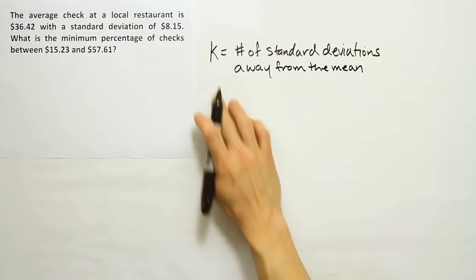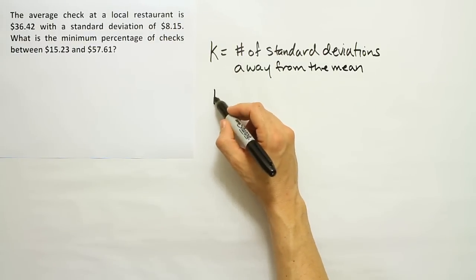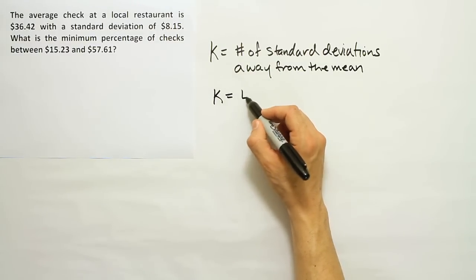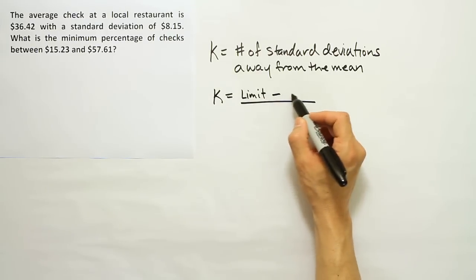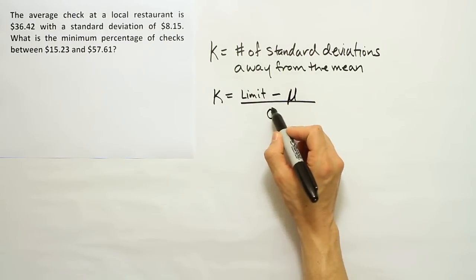And I recommend if you're trying to find K to use the following formula. So I'm going to say limit minus the mean over sigma.